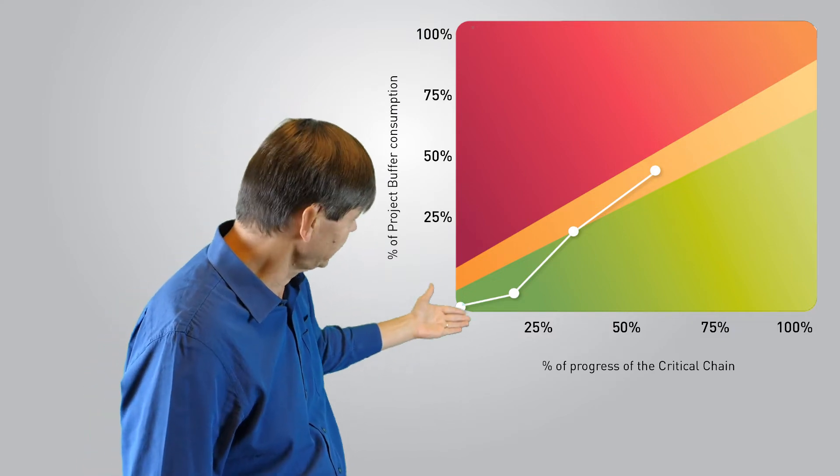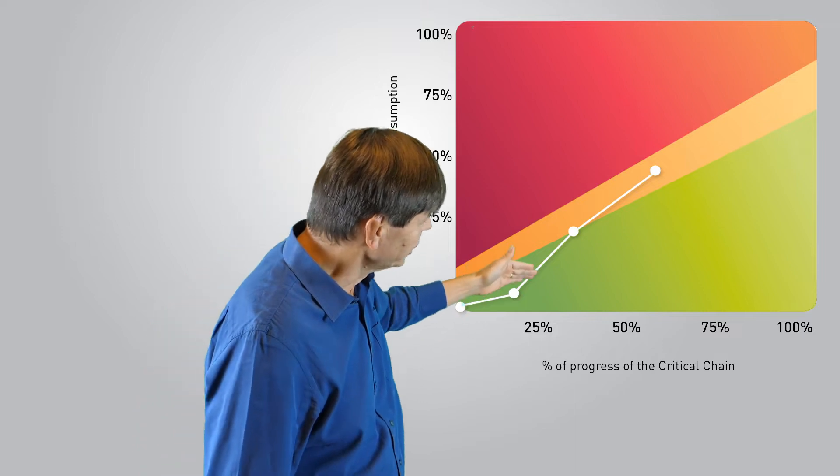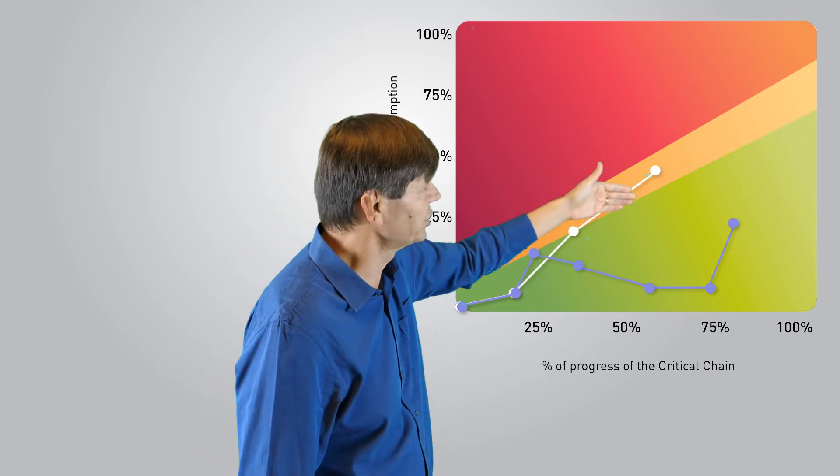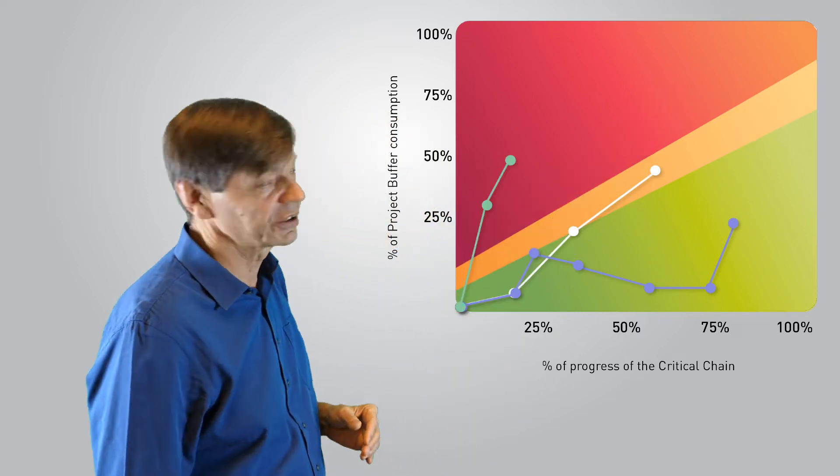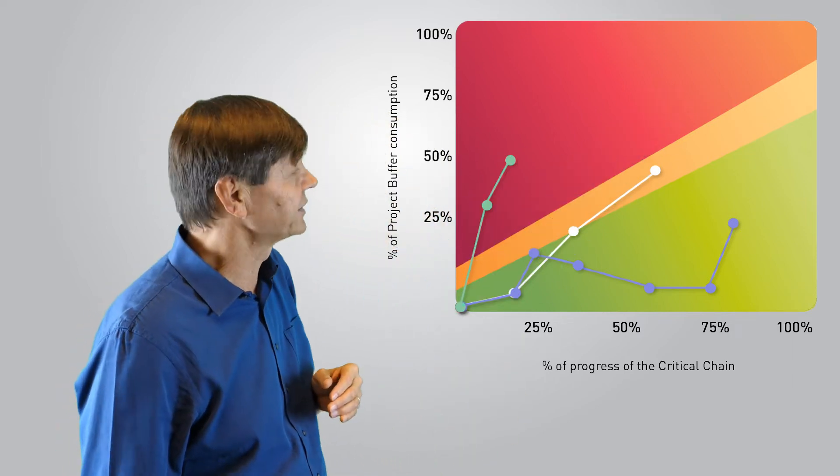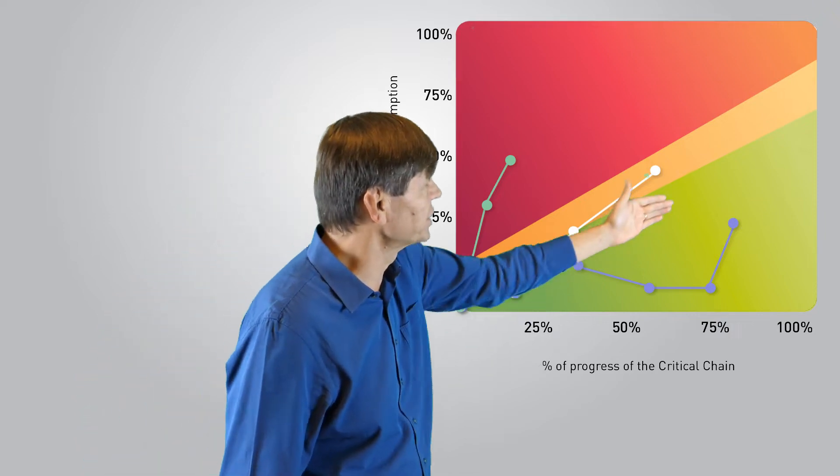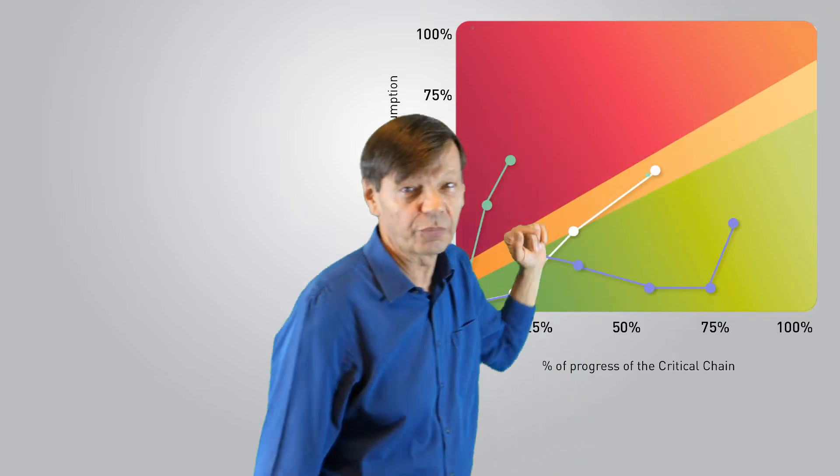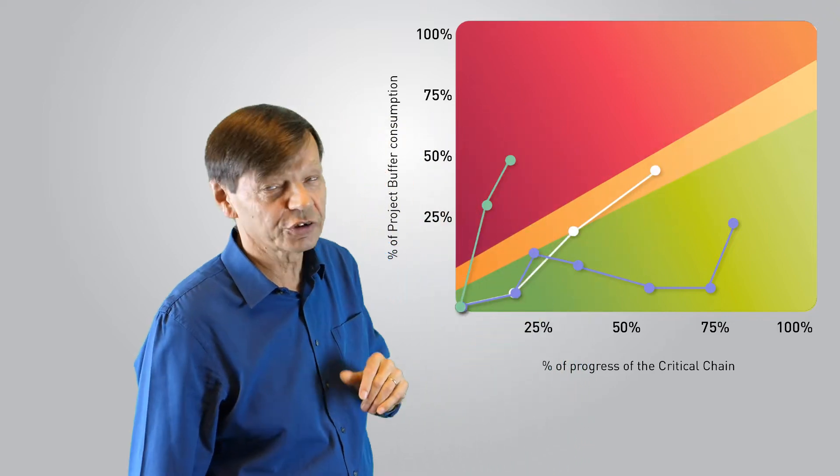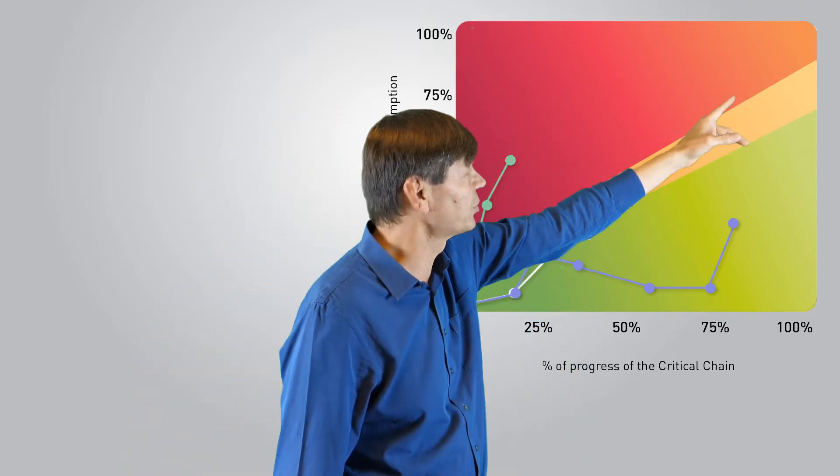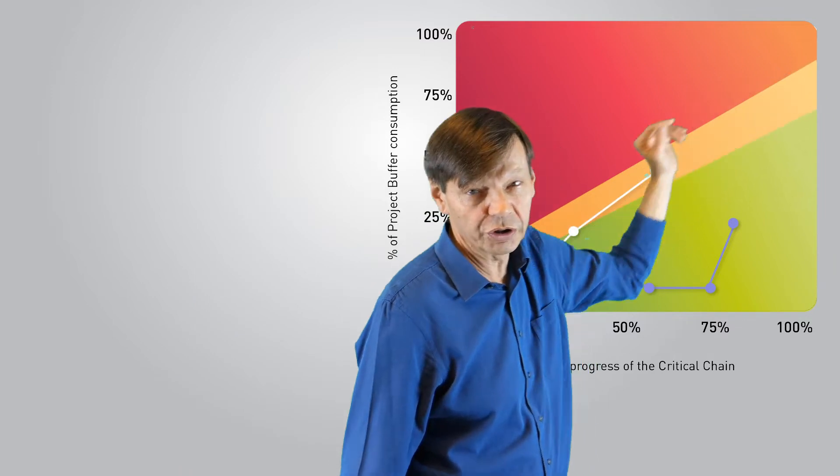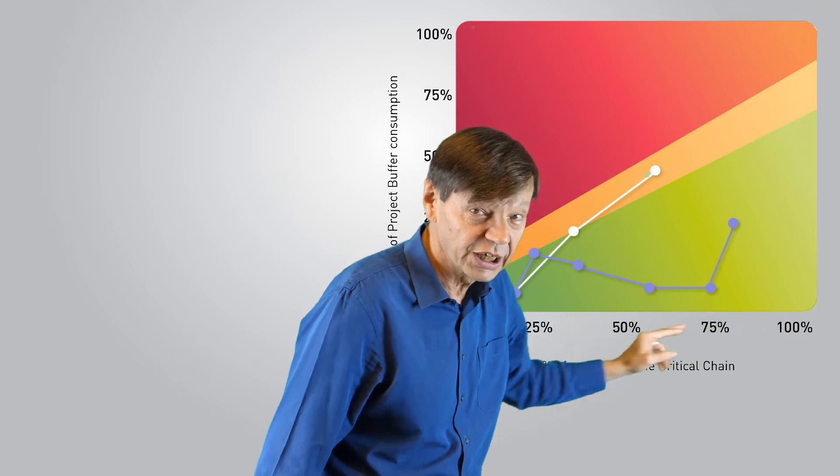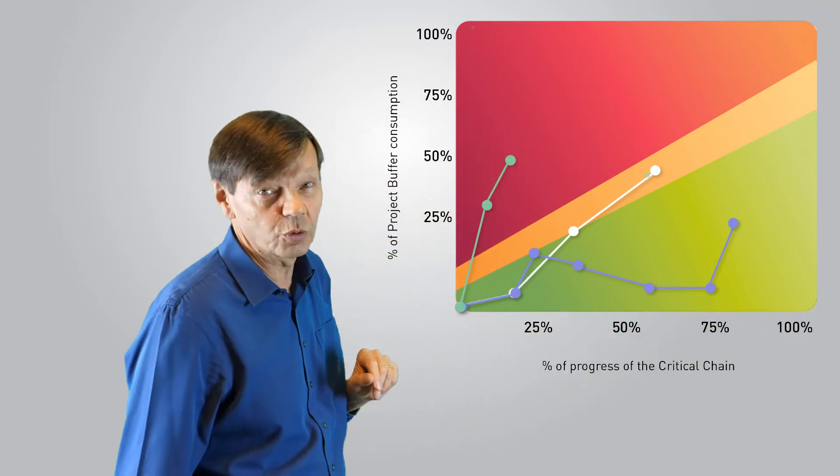When you are executing a project, obviously you start down here at the origin right at 0%, and as you do the work and progress and consume some of the buffer, you end up crossing this graph. If all goes well, you'll probably finish around here—that's to say, not quite up in the top right hand corner, because in fact the top right hand corner is the date you will promise your client or your management. That's to say, you expect to have finished the project of course and to have consumed all of the buffer.